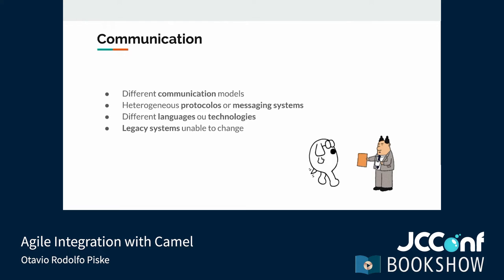It is important to be adaptable. Sometimes the other party is unable to adapt — funding, resources, or technology may prevent them from changing. Third-party services, industrial equipment, and IoT sensors are good examples of systems that may be unable to adapt to our needs. And remember, we usually have to do that in a heartbeat. There is no time.